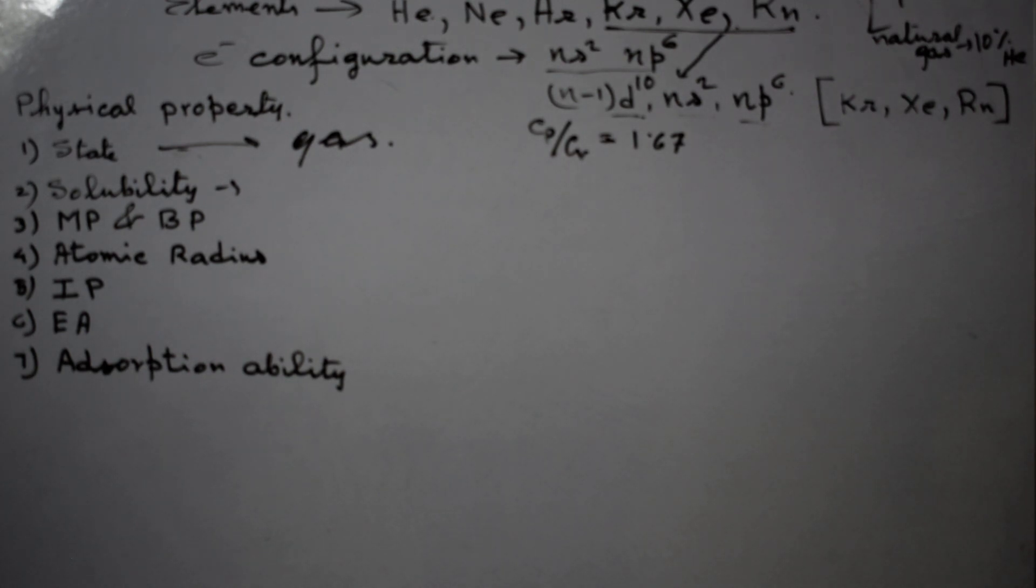Due to presence of this filled orbital, Group 18 elements are inert in nature. Now first, let us take some properties, especially physical properties of these elements.